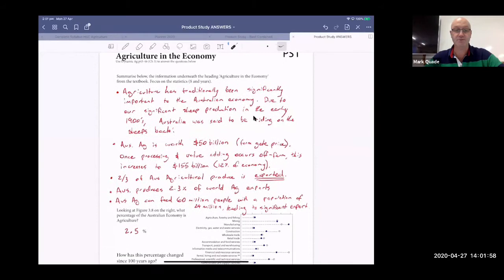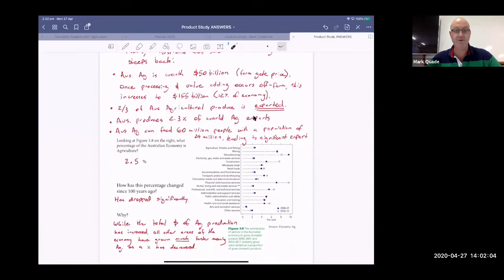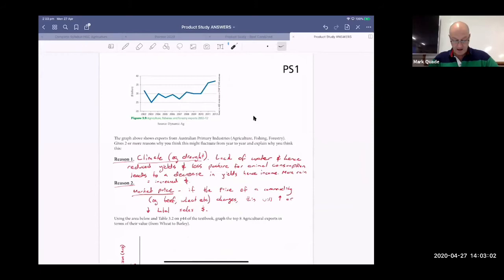So we've got a little graph here, straight out of your ag textbook. What is the percentage of the Australian economy that is agriculture? That works out at about two and a half percent. How has this changed since 100 years ago? Percentage wise, it's dropped a lot. But that is simply because all of these other industries have increased. So the percentage has dropped significantly, even though our agriculture has increased. We're producing more now than what we ever have. It's just that the other industries have all increased a lot more.